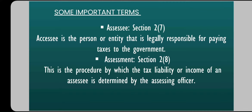Let's talk about assessment now. Just as assessee was under Section 2(7), assessment is under Section 2(8). Basically, assessment is a procedure by which the income of an assessee — meaning any individual, business, or entity — is calculated and determined. And who does this work? The Assessing Officer does it, from the Income Tax Department. This is the procedure by which the income of an assessee is determined by the Assessing Officer.